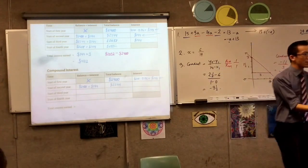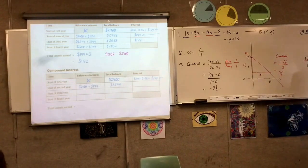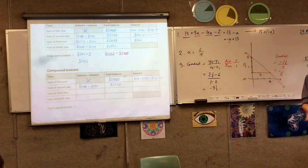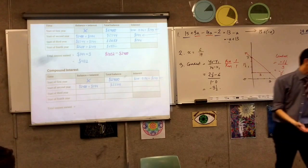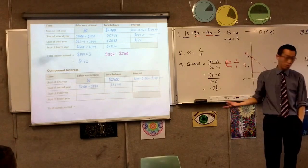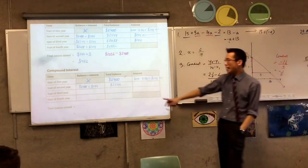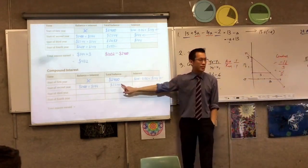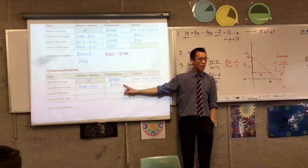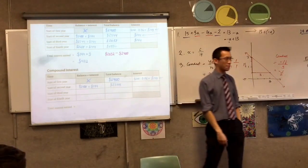I want you to see — nothing has changed. If you have one year of simple interest and one year of compound interest, and it's compounding annually, nothing is different. They're still paying you 6%, it's still at $2,400. At the start of the second year, everything is still the same.